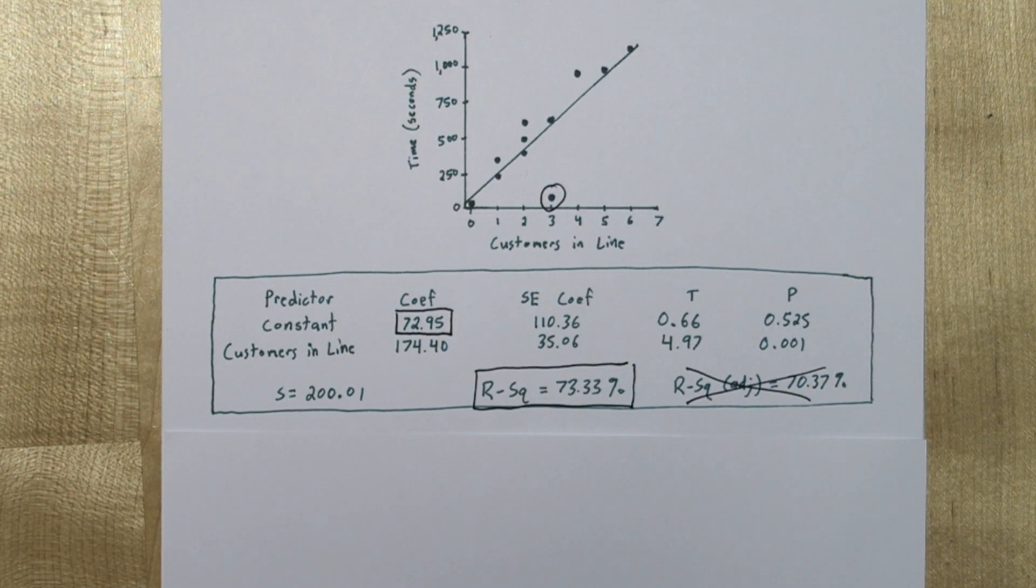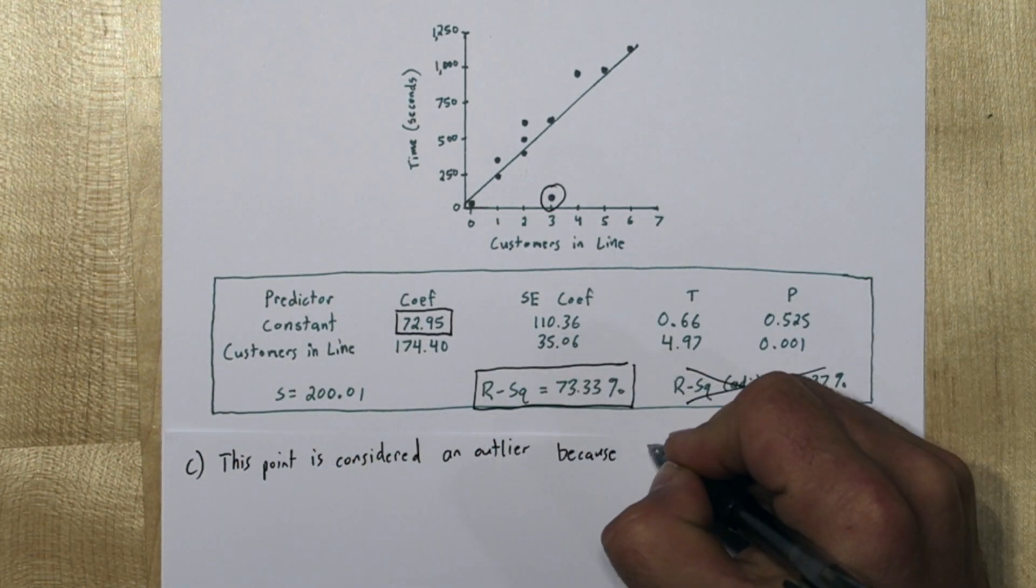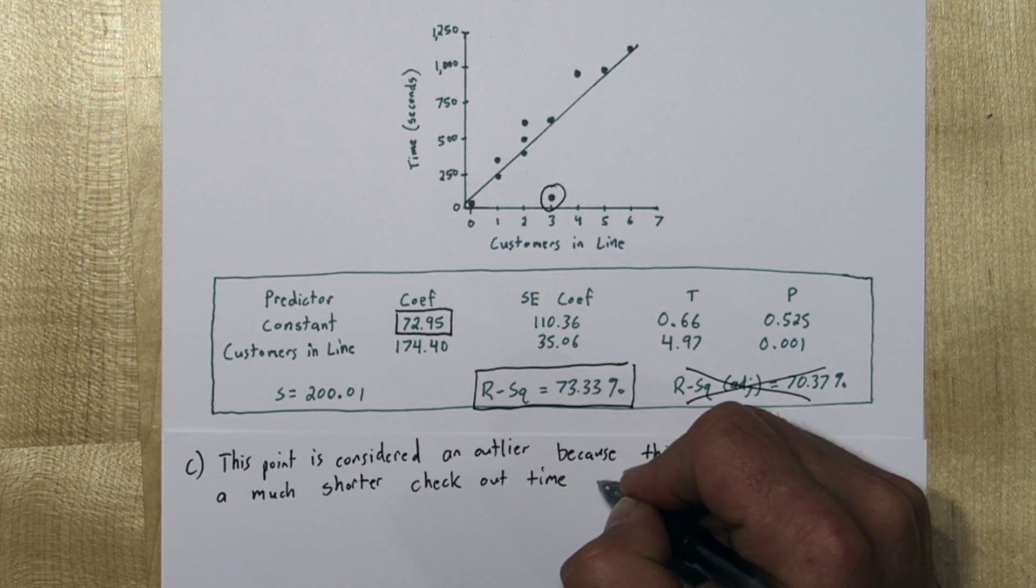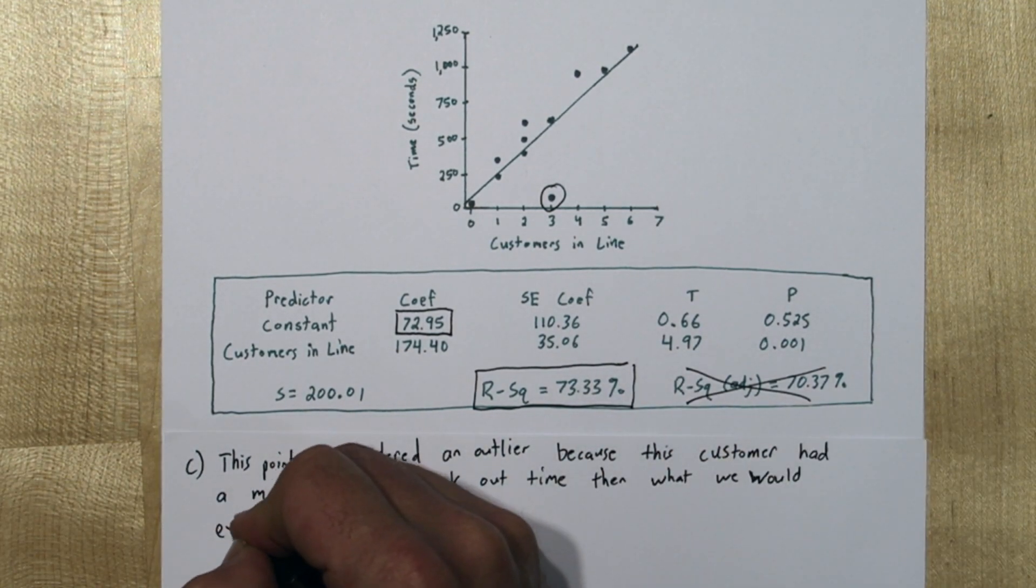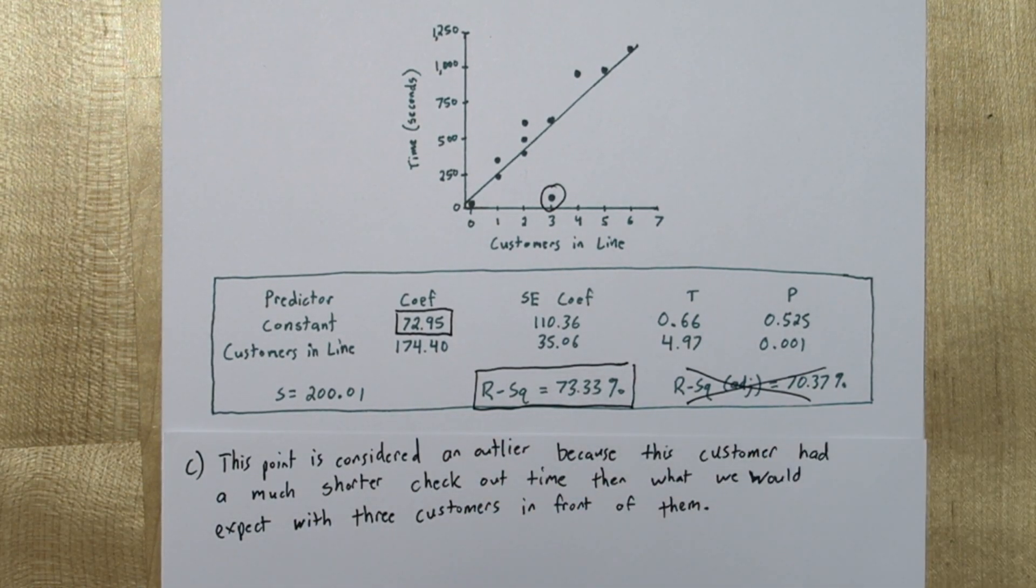We want to actually use context. So, in context, this customer had three people ahead of them in line, but they had a really short checkout time. We can say this point is considered an outlier because this customer had a much shorter checkout time than what we would expect with three customers in front of them.